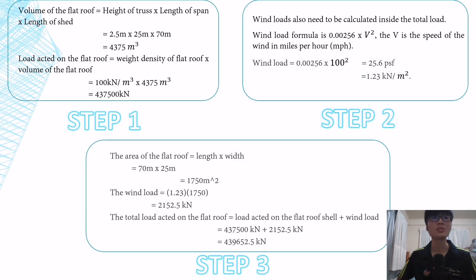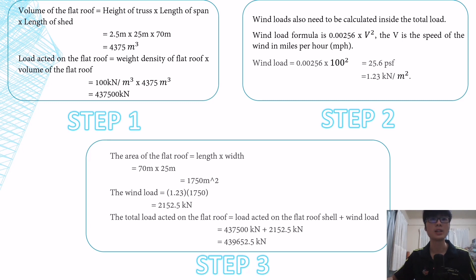First, we calculate the volume of the flat roof, which is 4,375 m³, and the load on the flat roof, which is 437,500 kN. Step 2, we calculate the wind load, which is 25.6 PSF, then convert to kN per meter squared, which is 1.23 kN/m². The last step is we calculate the area of the flat roof, which is 1,750 m², and the wind load, which is 2,152.5 kN. Finally, we calculate the total load on the flat roof, which is 439,652.5 kN.